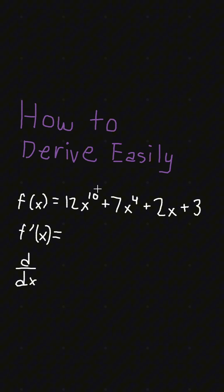To do the power rule, we'll be taking the exponent and multiplying it by the coefficient, getting us 120x for this first term. Then we'll subtract 1 from the exponent: x to the power of 9.